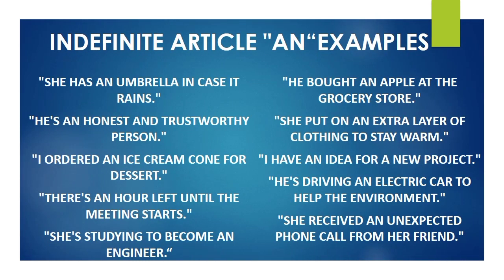Example of indefinite article AN: She has an umbrella in case it rains. She is an honest and trustworthy person. I ordered an ice cream cone for dessert. There is an hour left until the meeting starts. She is studying to become an engineer.